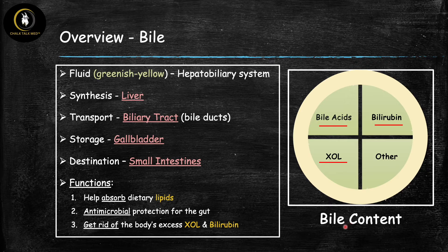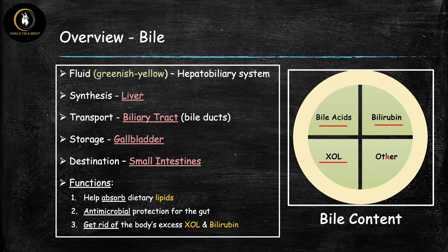Now let's quickly talk about bile content. Bile is made up of three major components. First are the bile acids, which are important for functions one and two — absorbing dietary lipids and providing antimicrobial properties. The other two are bilirubin and cholesterol, both present in bile for function three so they can be eliminated from the body. In addition, bile is also composed of water and electrolytes that help solubilize the material inside it.